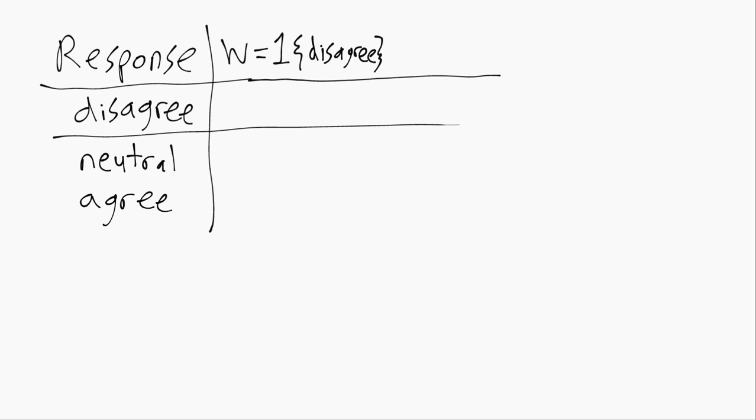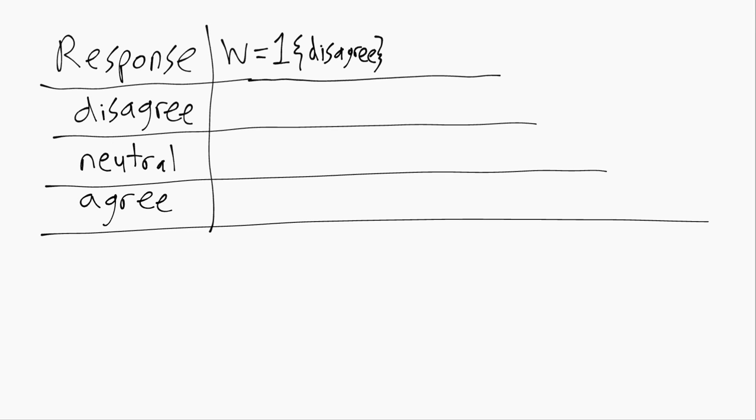So if we look at when the response is disagree, then disagree is true so the indicator evaluates to one and w equals one.